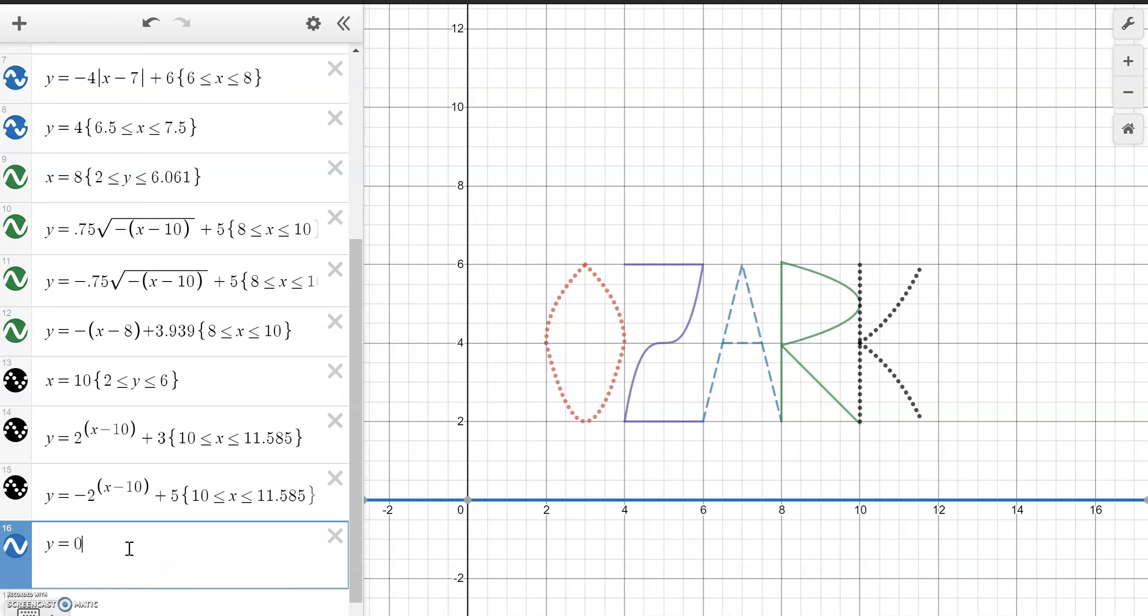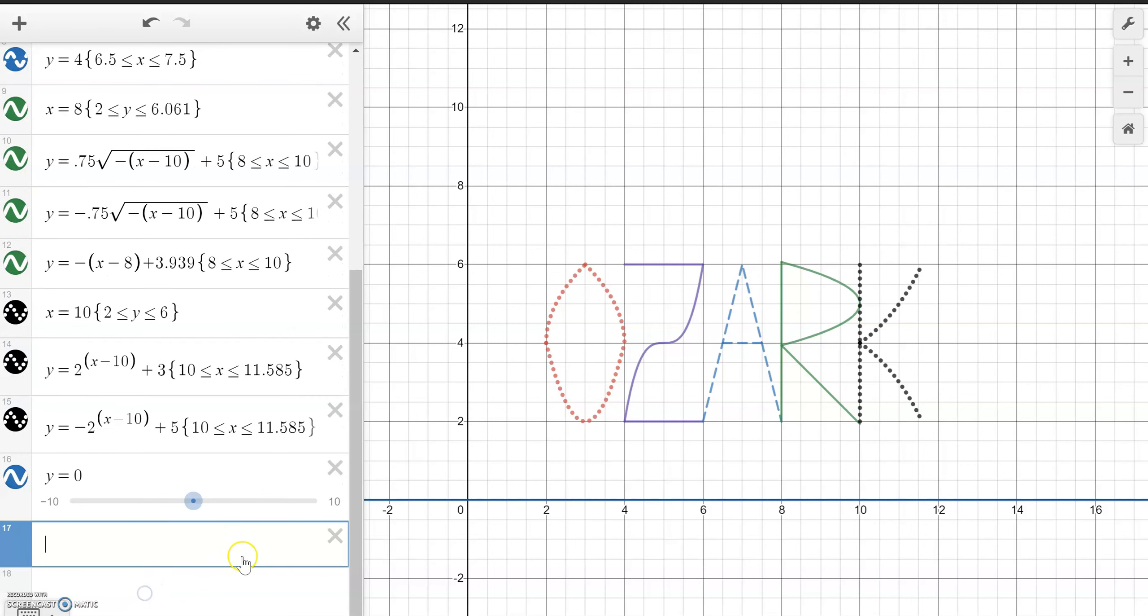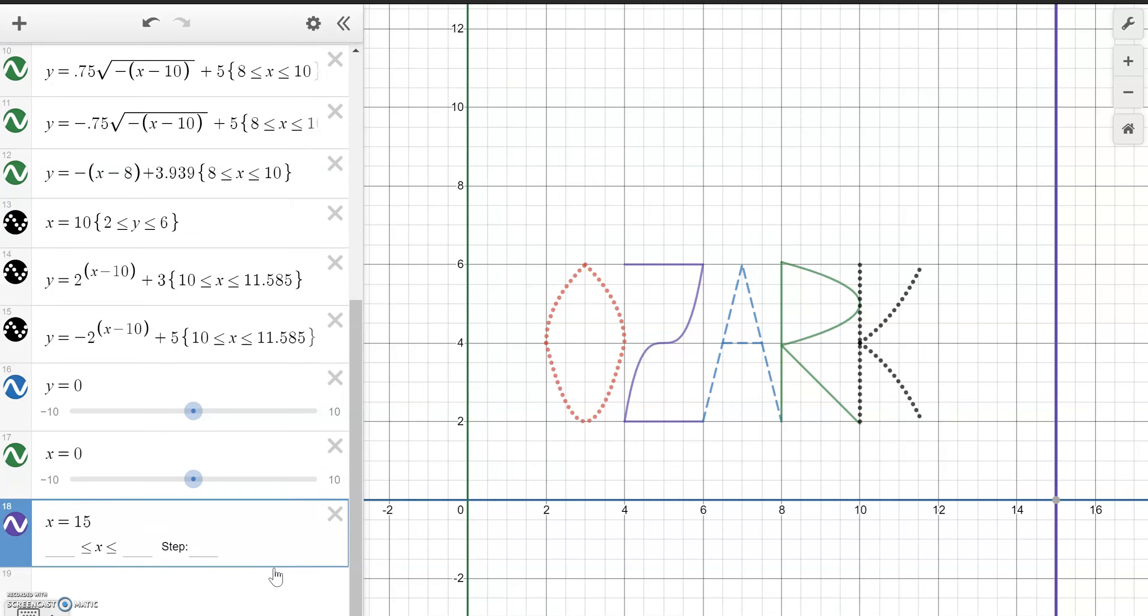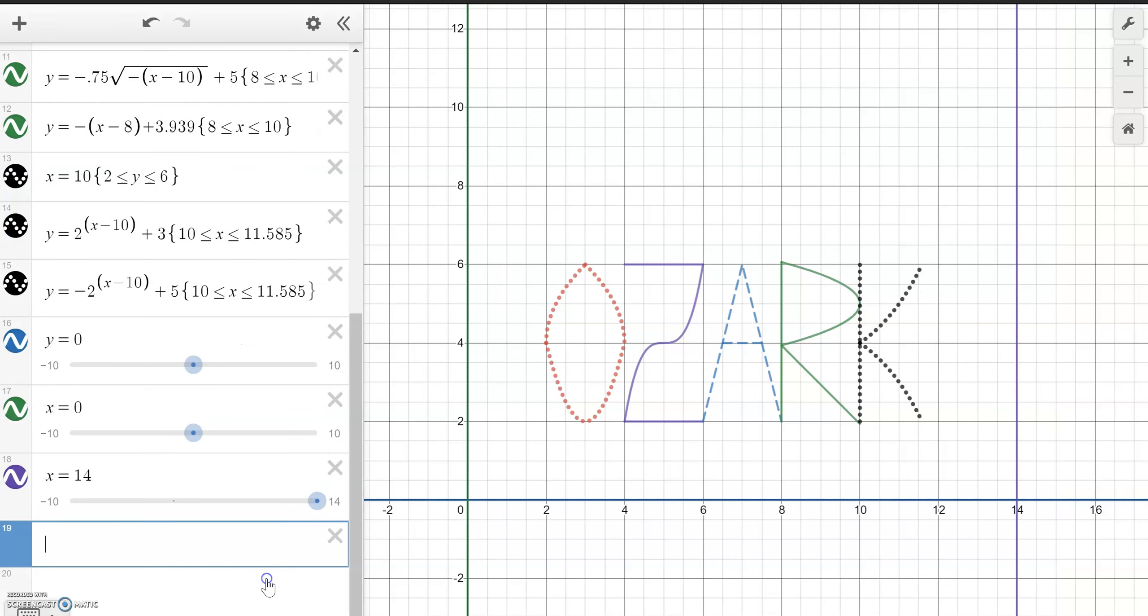So y equals 0, then x equals 0. That creates two vertical and horizontal lines at the origin. And then we want 14. And then I want a y equals at 8.